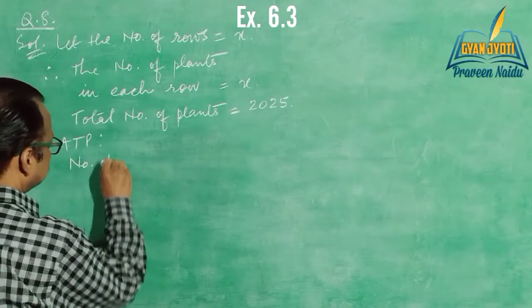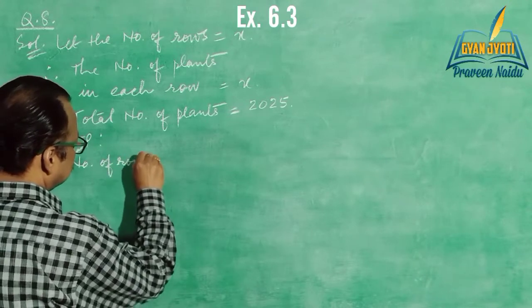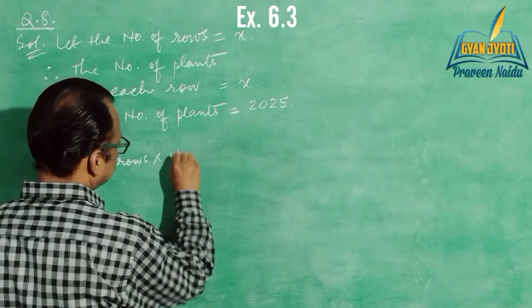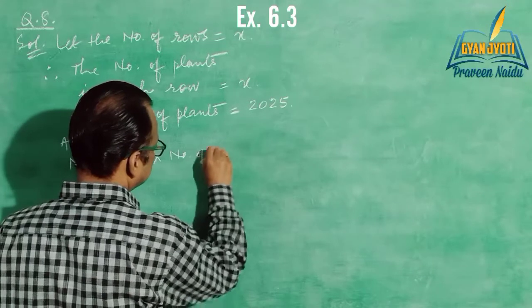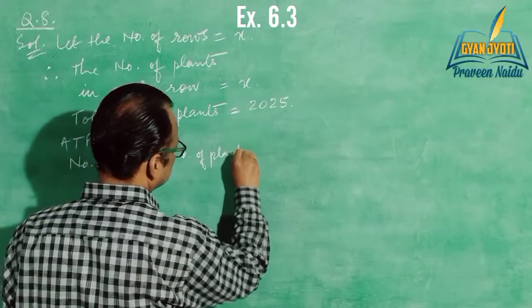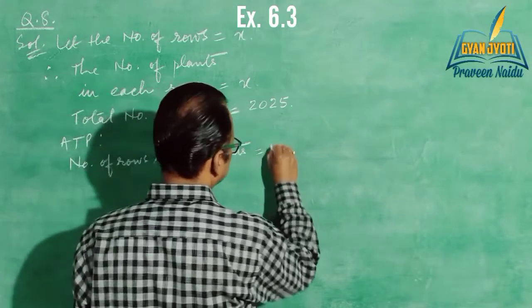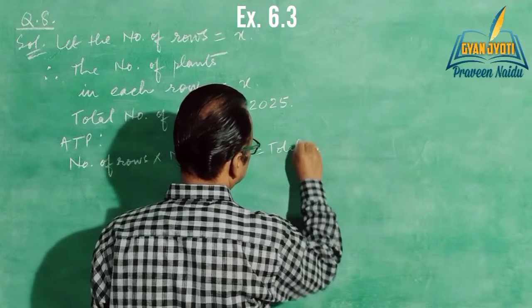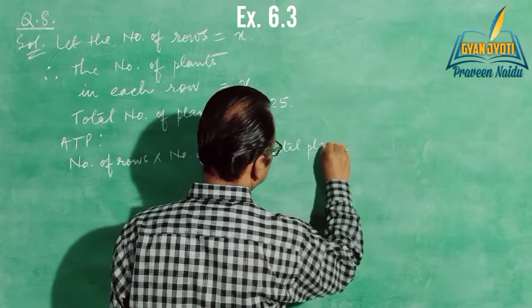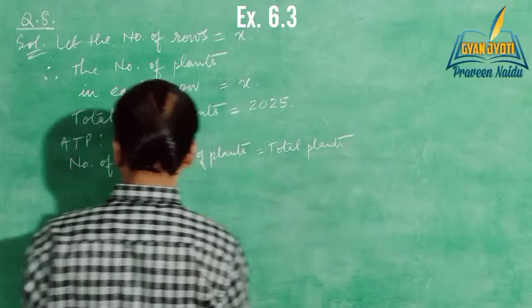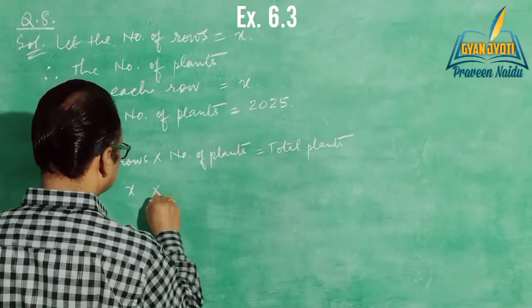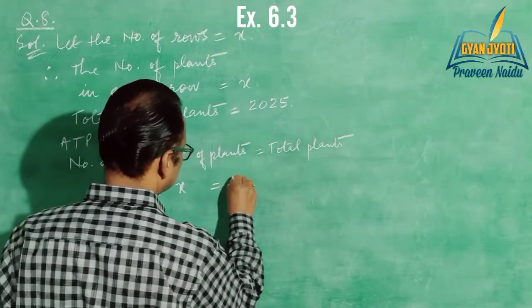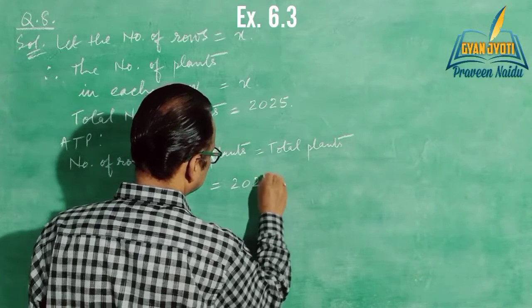So according to the condition given in the problem, number of rows into number of plants in each row will be equal to the total number of plants. Therefore x into x is equal to 2025.